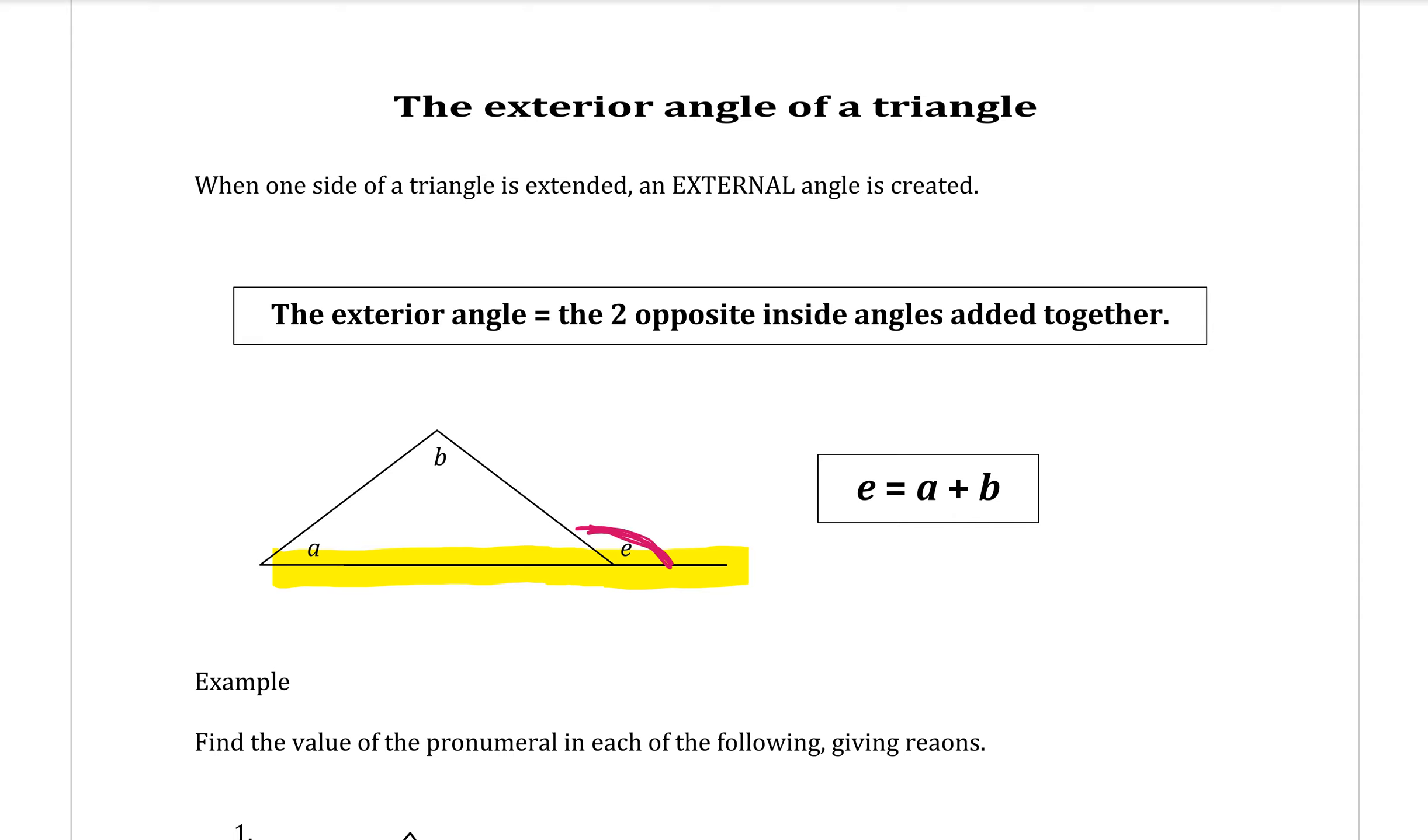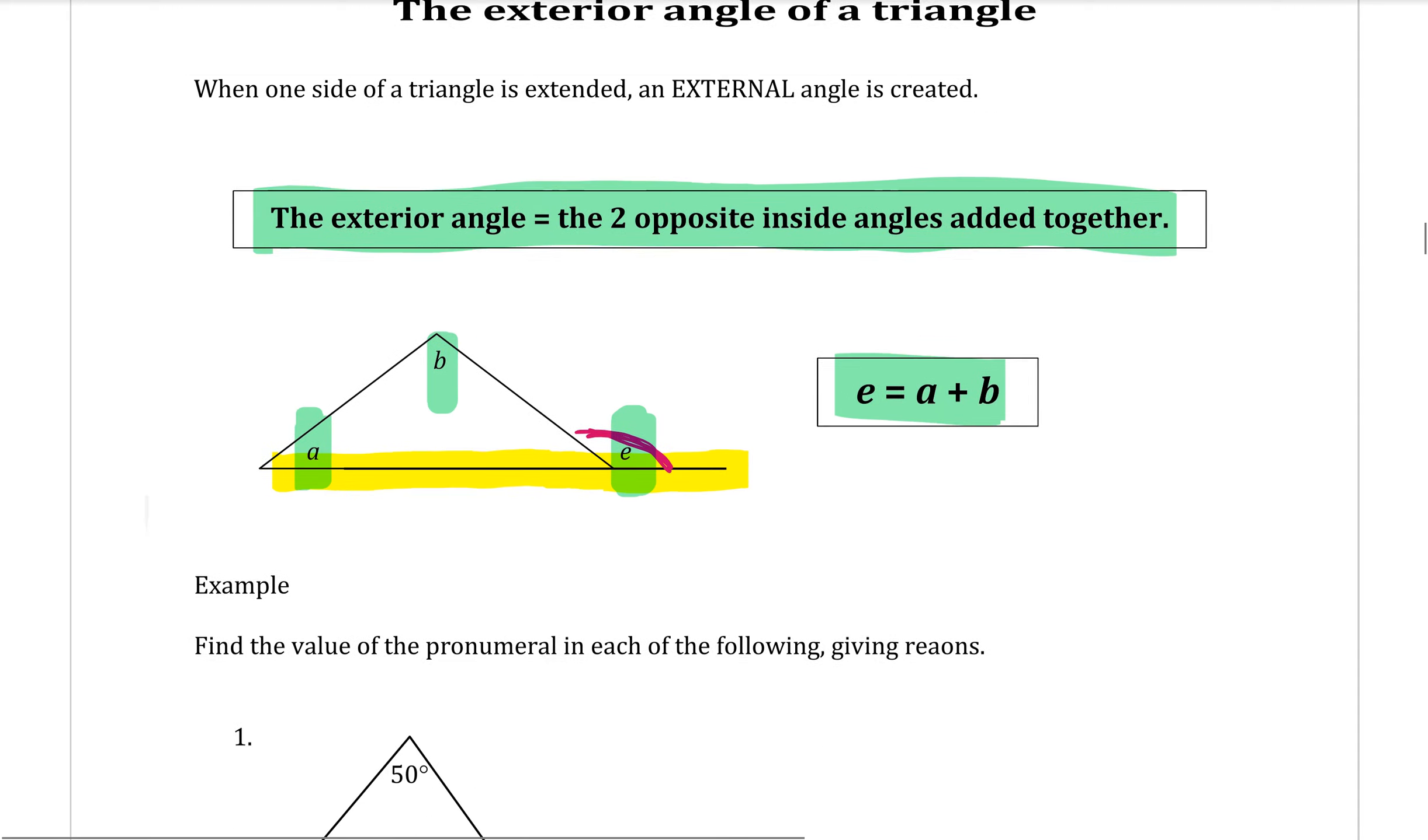Now that angle is always equal to the opposite interior angles added together. To make that into an equation, the exterior angle, which we're calling E, is equal to these inside angles A and B added together. That's this equation here. I don't expect you to remember that as a formula, but that's the process we're going to do.